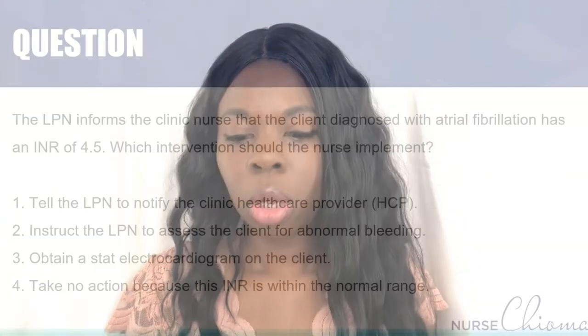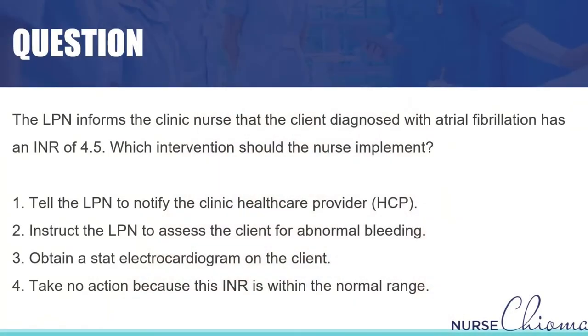The patient has atrial fibrillation, which is a heart rhythm — a chronic problem in this situation — and their INR level is 4.5. You need to know immediately: is that a normal range for INR levels? The INR of 4.5 is actually very elevated — pretty high — so that's abnormal.